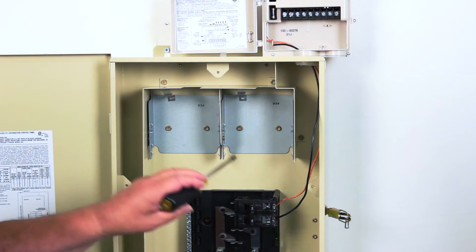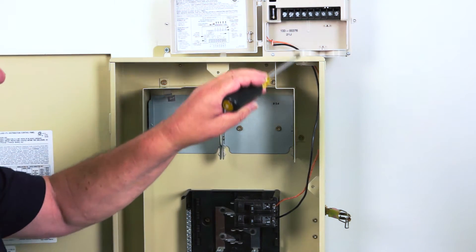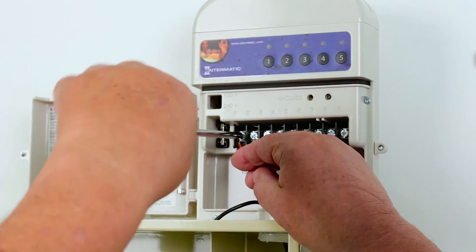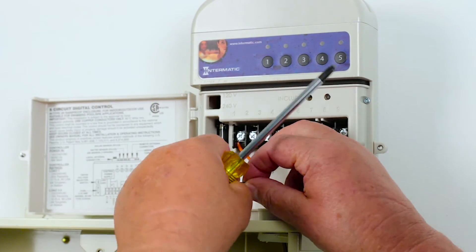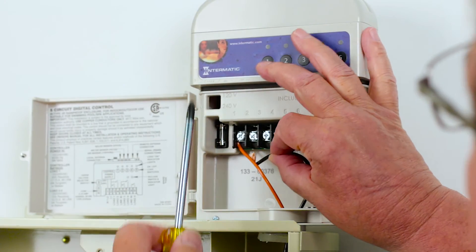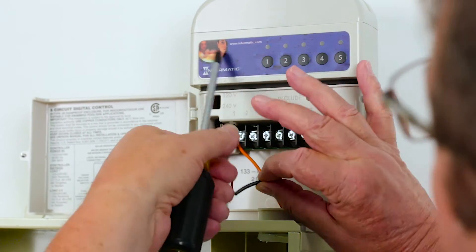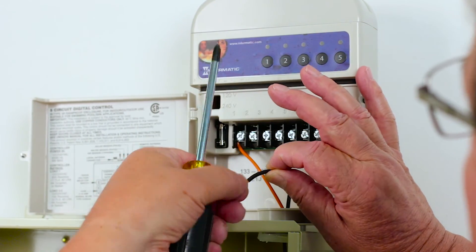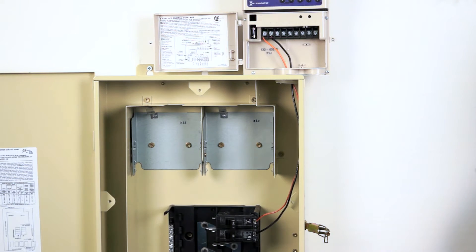Now we can wire to the breaker. One side of the double pole breaker goes to Terminal 1. The other side goes to Terminal 2. This will supply power to circuits 1 and 2 on the PE653 receiver. Circuits 3, 4 and 5 will be explained in future videos.